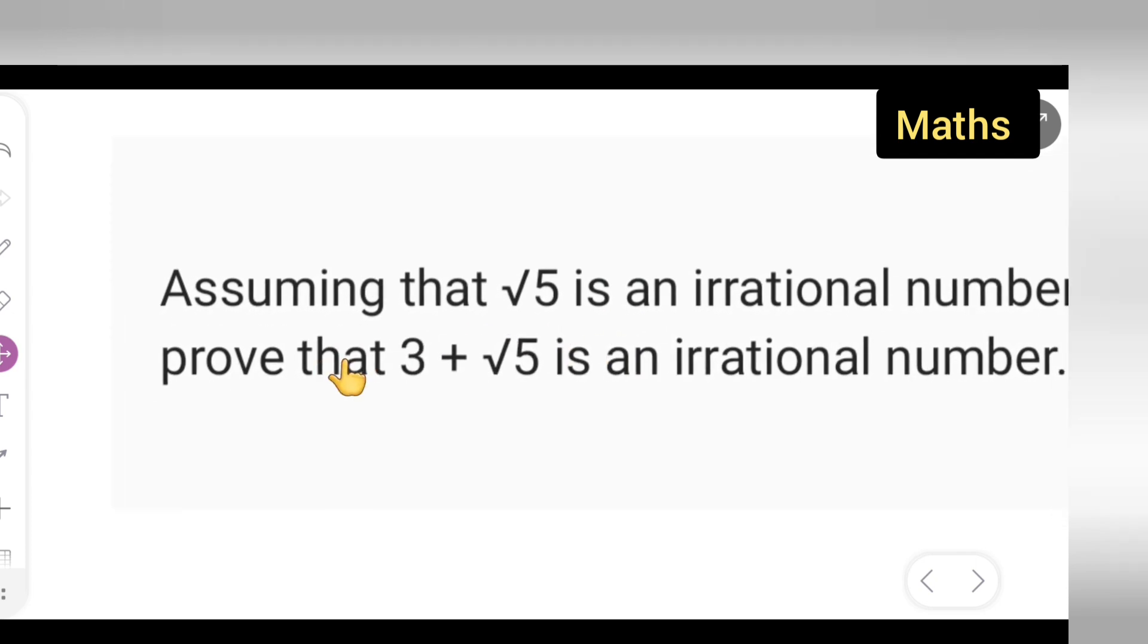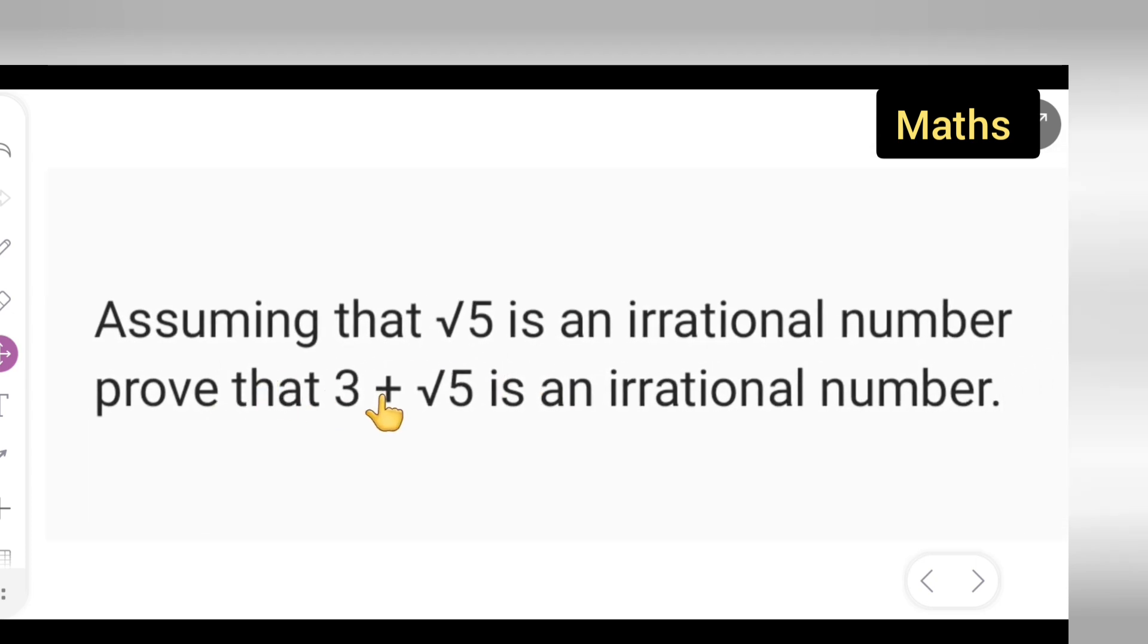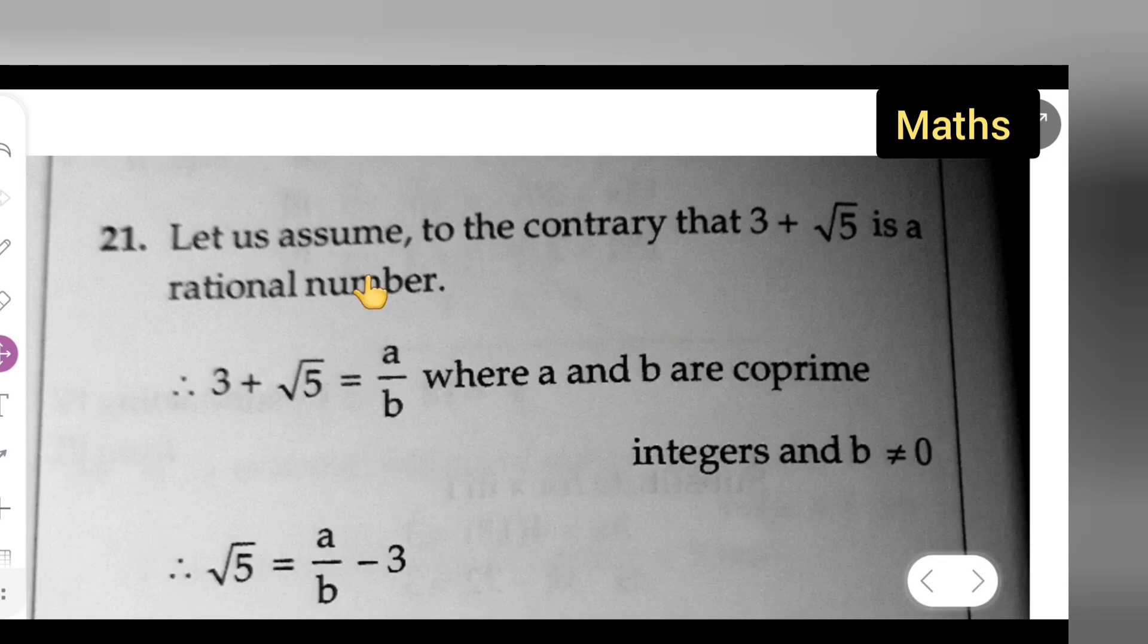So let us assume that 3 plus root 5 is a rational number. We are going to prove this by contradiction. Let us assume, to the contrary, that 3 plus root 5 is a rational number.